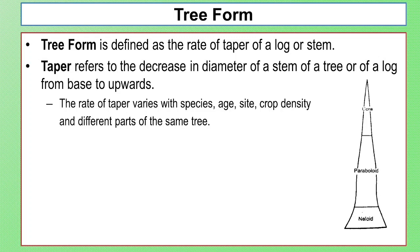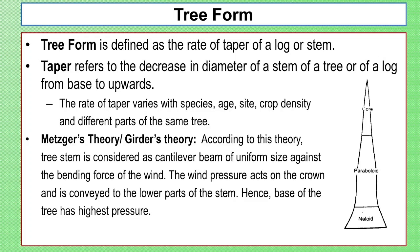According to Metzger's theory, the tree stem is considered as a cantilever beam of uniform strength against the bending force of the wind. The wind pressure acts on the crown and is conveyed to the lower parts of the stem, resulting in higher pressure at the base.